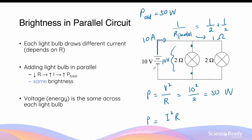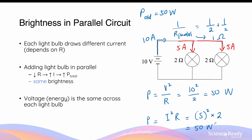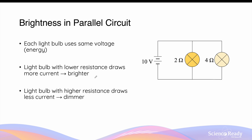Since the two light bulbs have the same resistance, the 10 amps of current divides equally among them, so 5 amps flows through each light bulb. The power of each light bulb is then current squared times resistance: 5 squared times 2 ohms, which is 25 times 2, also giving us 50 watts. You can see that despite adding the same light bulb to the circuit in parallel, the power and therefore the brightness of the original light bulb is exactly unchanged.